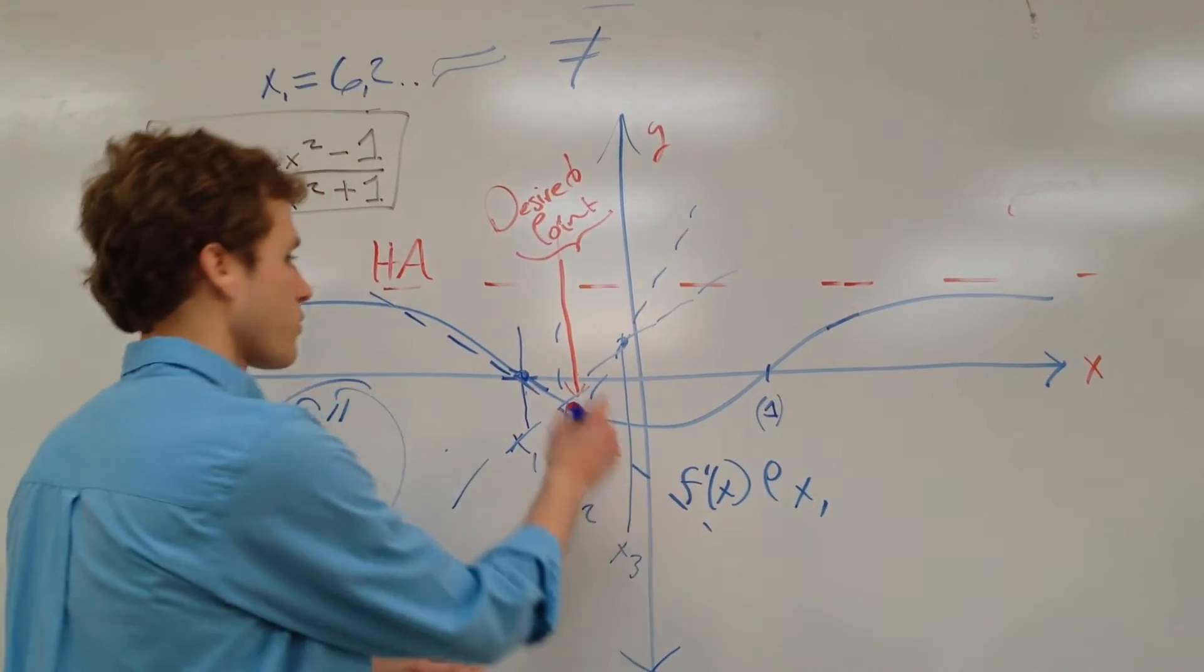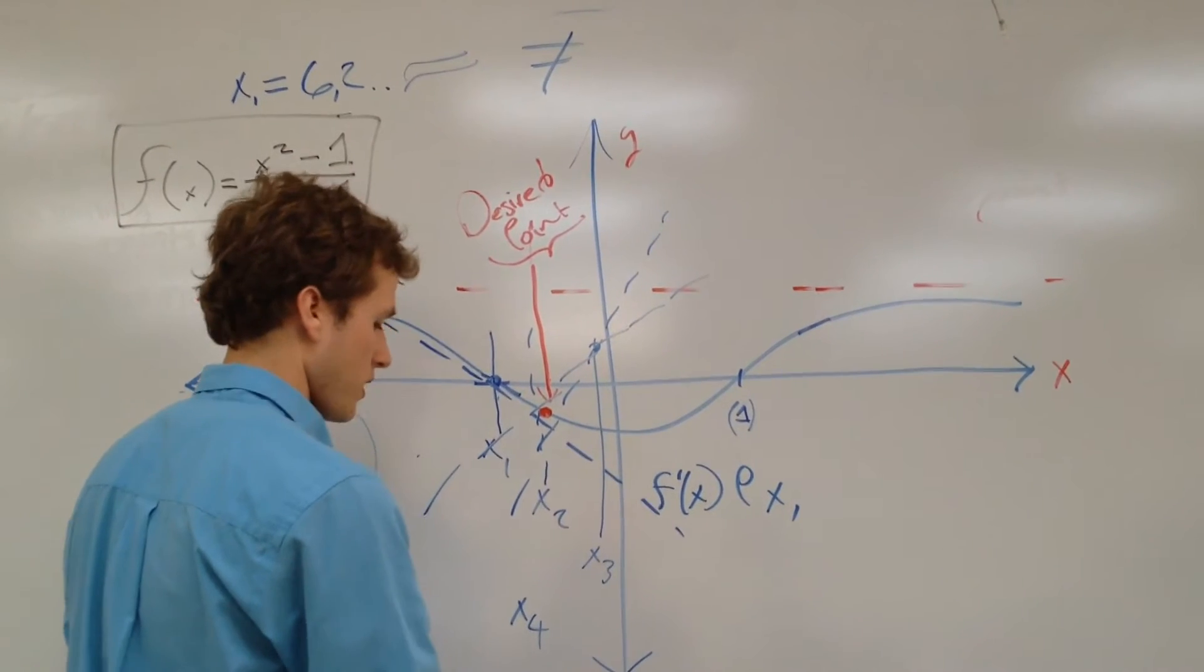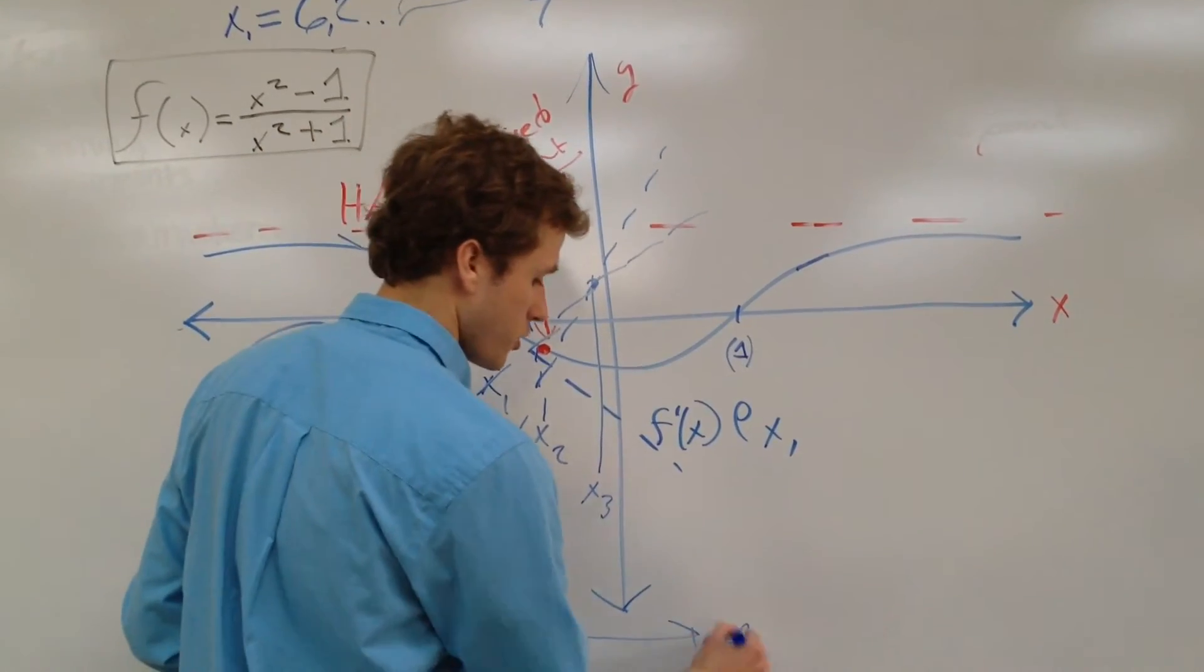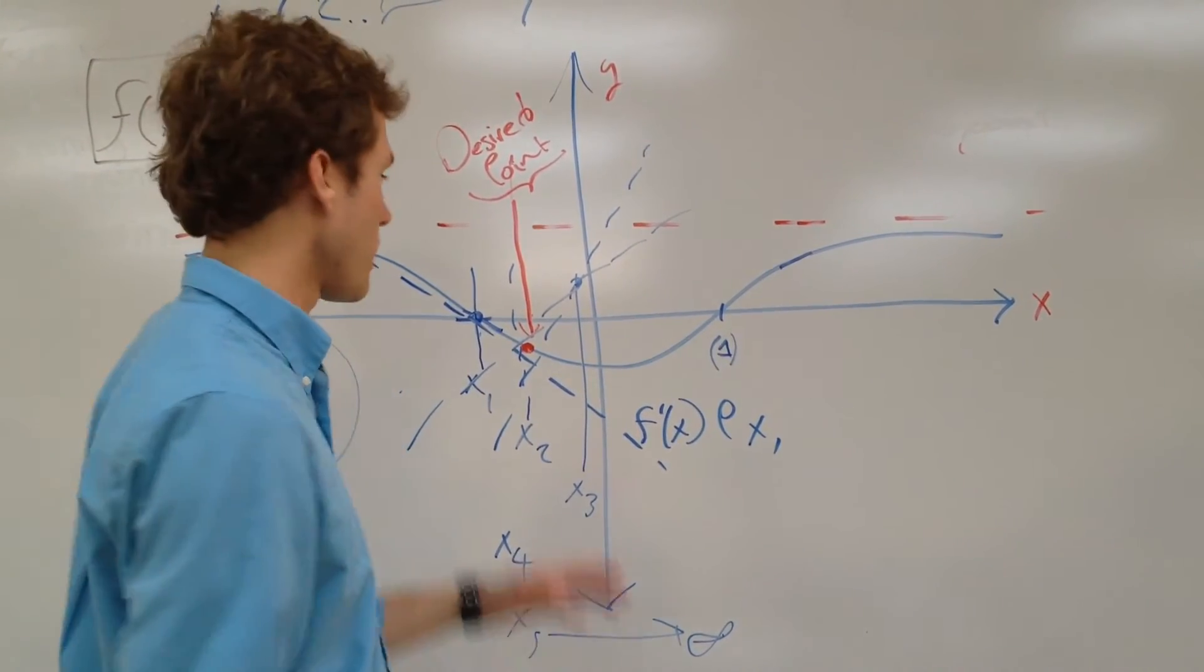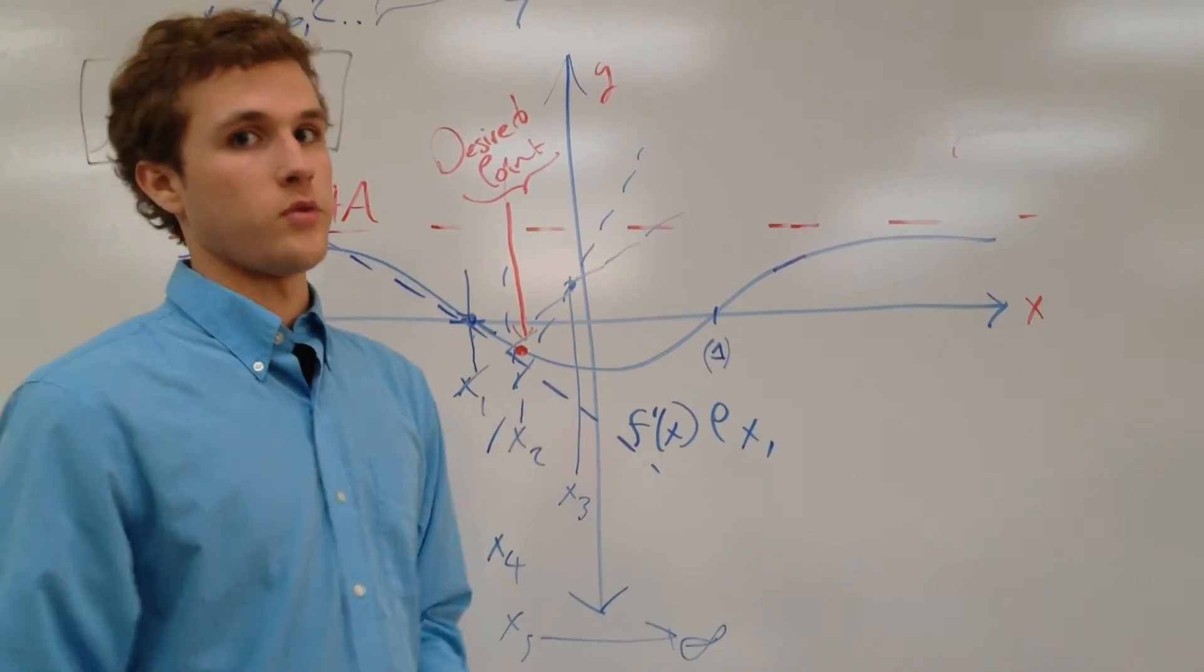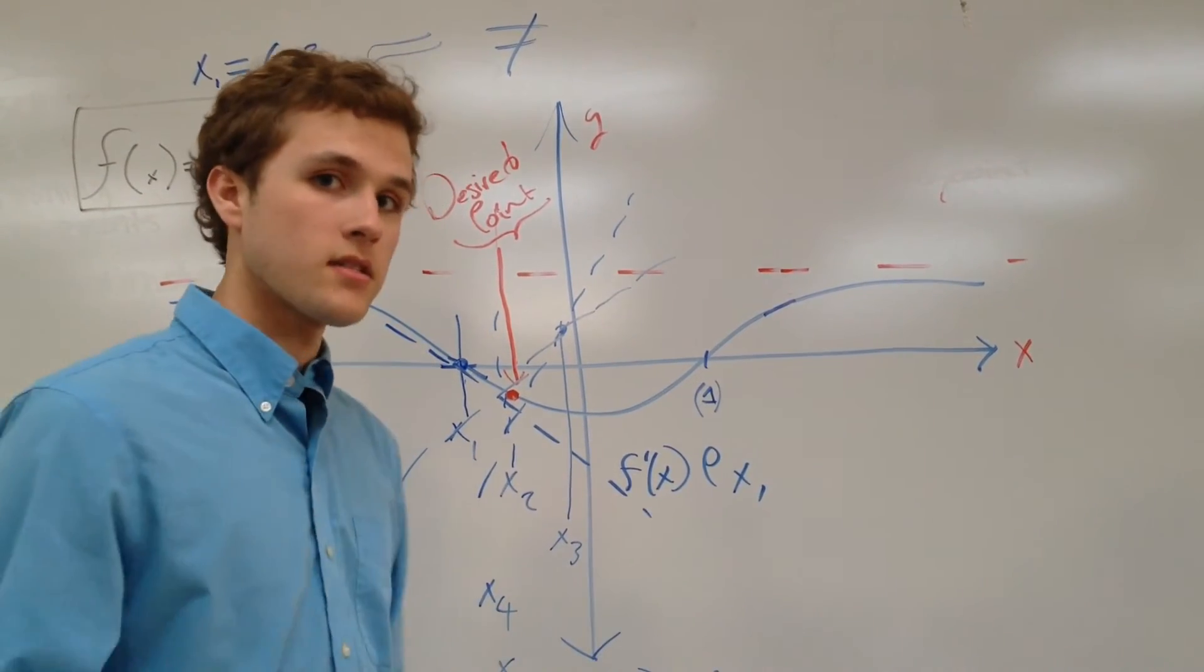So we take x3, and we're getting closer and closer. We can continue this out to x4, x5, as much as you want, all the way to an infinite series of x values to get infinitely close to it, but you can never get perfectly there. So that is the basis of Newton's method.